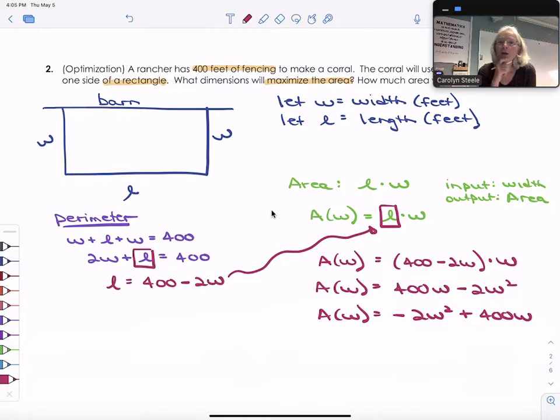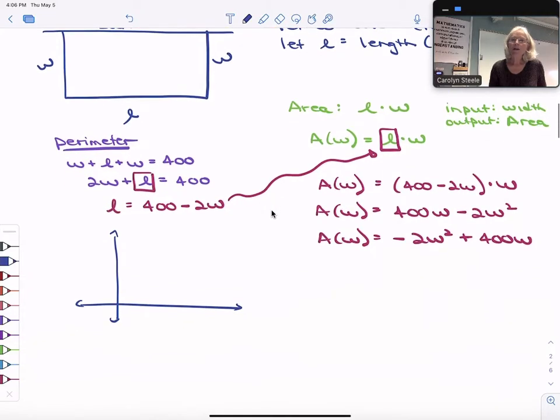Now let's just draw a little picture of what this function would look like. First of all, we know because it's w squared, we know what shape is it going to be? A parabola. But we know because a is negative, it's going to open down. I'm going to draw just a quick sketch. I know my input is width. I know my output is area.